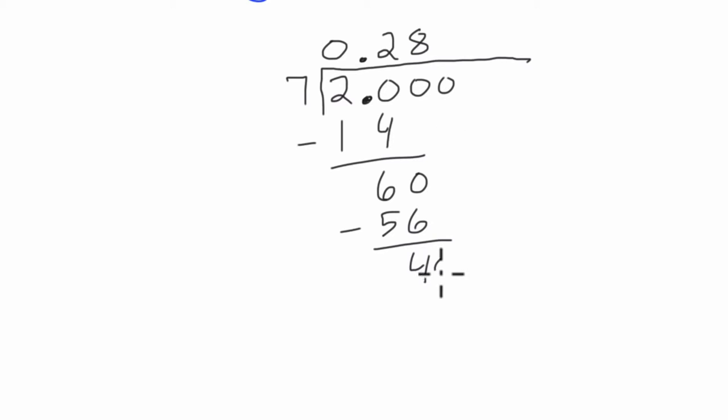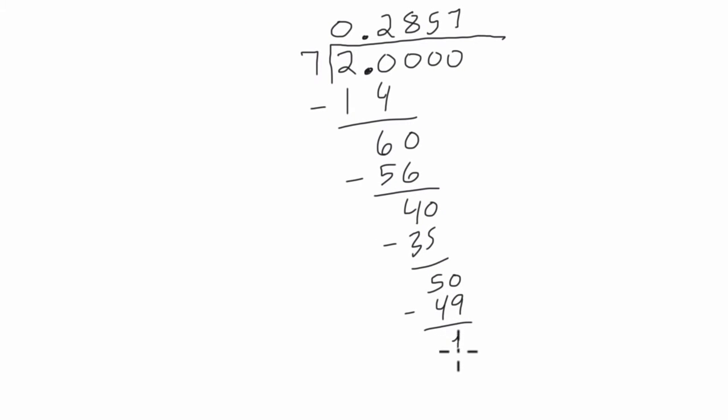7 goes into 40 now. It goes into 40 five times. 7 times 5 is 35. 40 minus 35 is 5. Carry this 0 down here. 7 goes into 50 seven times. 7 times 7 is 49, and 50 minus 49 is 1.